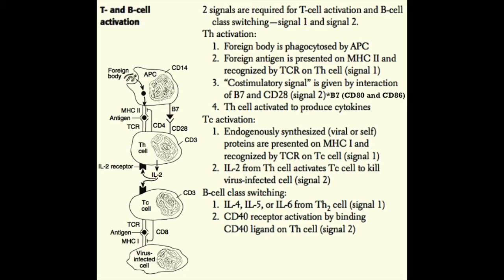As the B cell expands, it class switches — so instead of making IgM plasma cells, it makes IgG or IgA plasma cells. To recap: MHC class 2 and peptide interacting with the TCR complex on the CD4 T cell is signal 1; CD80 or CD86 binding to CD28 is signal 2. These activate the T helper cell, which upregulates CD40 ligand to interact with CD40 on the B cell. TH2 cytokines IL-4, IL-5, and IL-6 then drive somatic hypermutation, class switching, and memory and plasma cell differentiation.